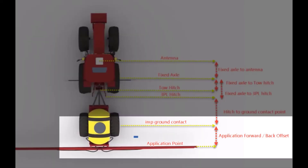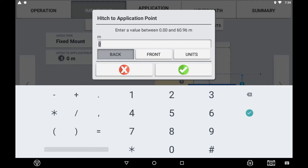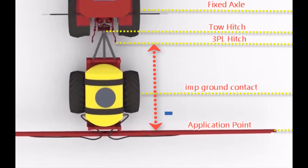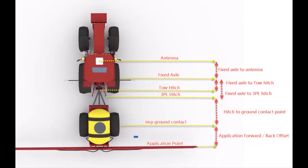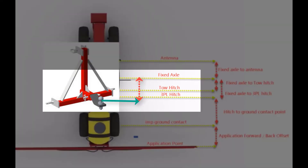As there is no application control with this setup, the implement ground contact point is where the coverage mapping will be measured from. When setting up a form of application control, there are additional measurements entered measured from the implement ground contact point. If selecting fixed mount as your hitch type, you enter the hitch to application point — the measurement from the three-point linkage hitch to the application point of the implement. Note that if your implement connects through a three-point linkage but still pivots on a central pin, it is best to set it as a drawbar hitch and allow for the extra distance in the fixed axle to tow hitch measurement within the vehicle setup.